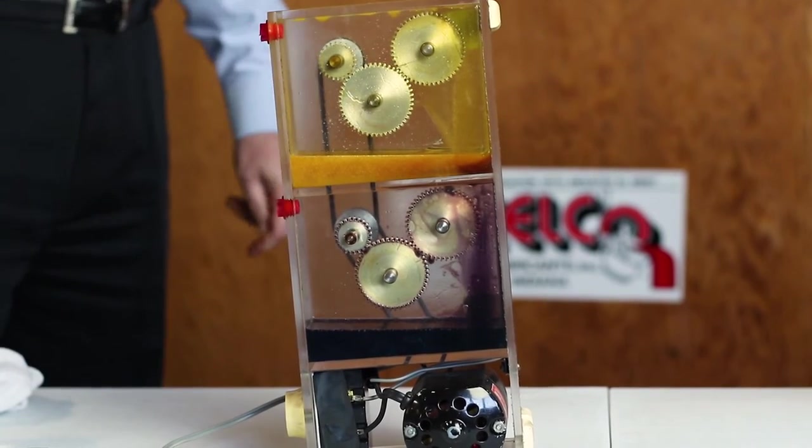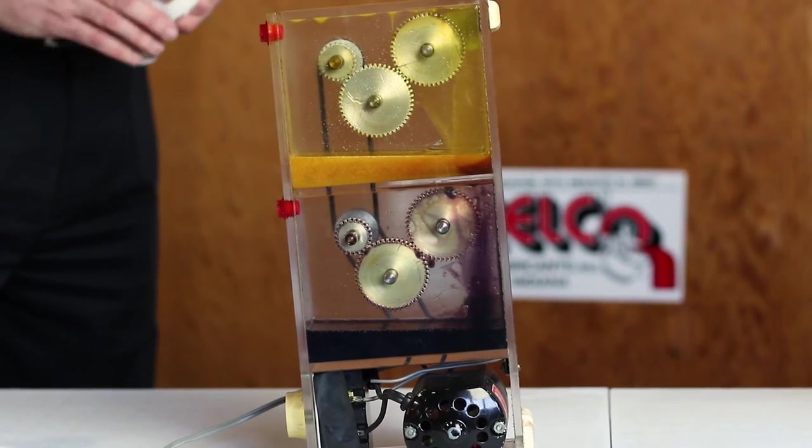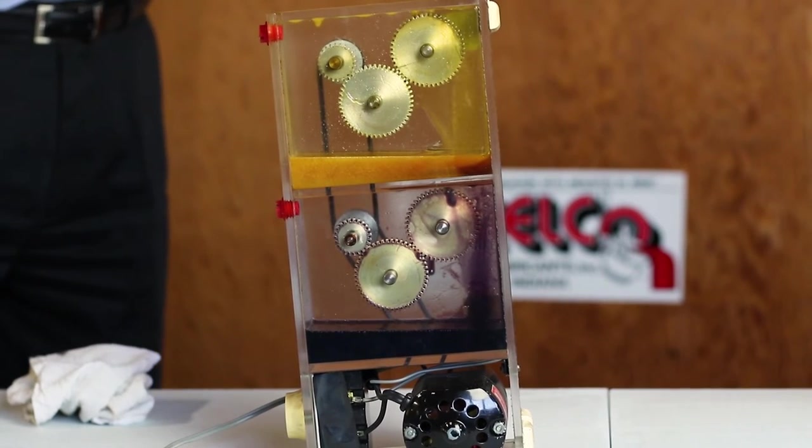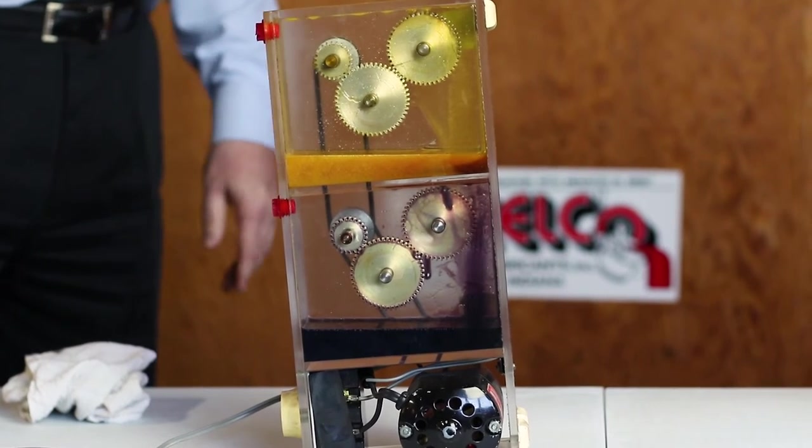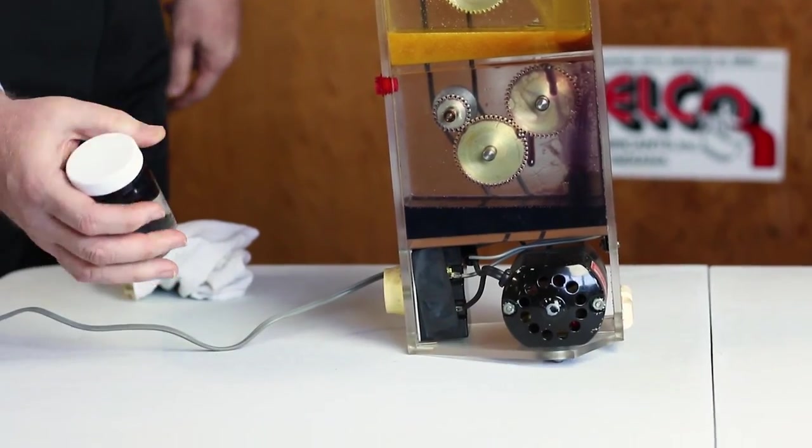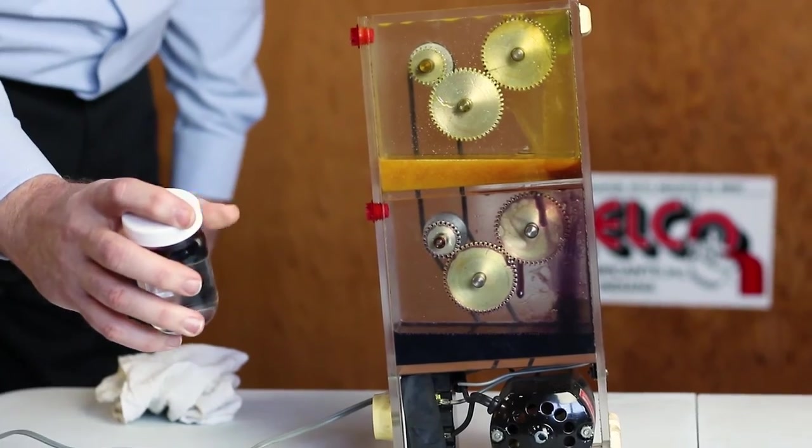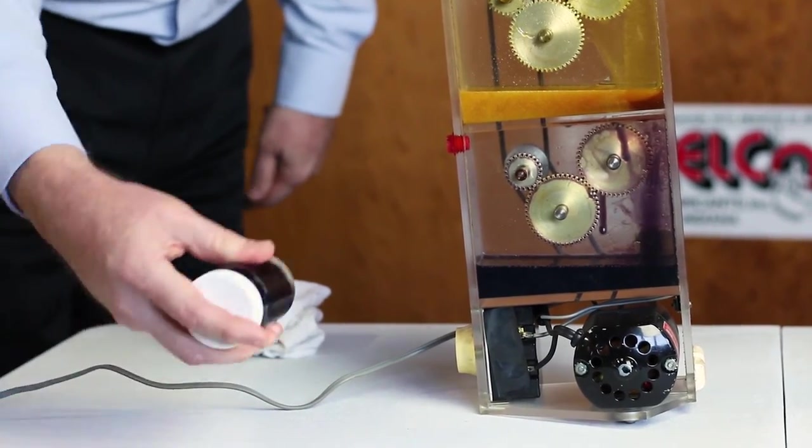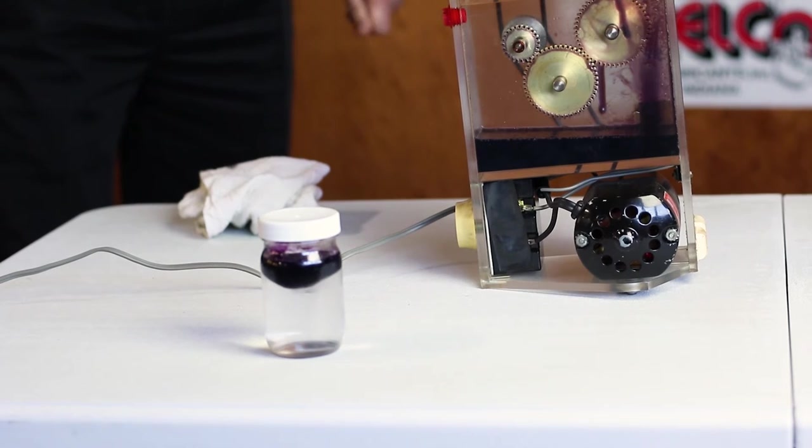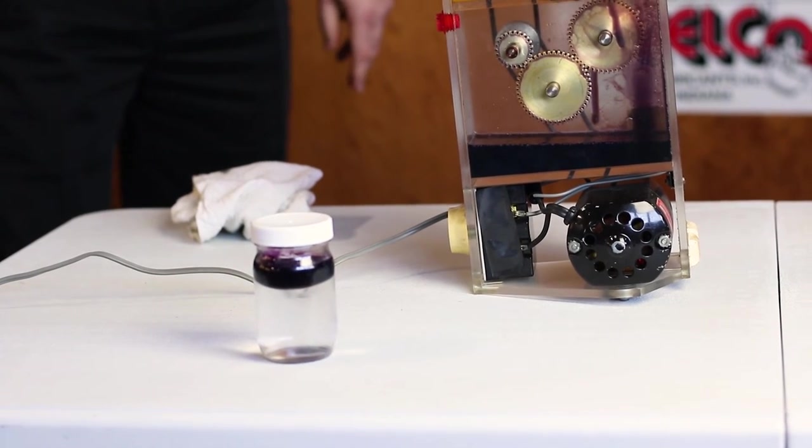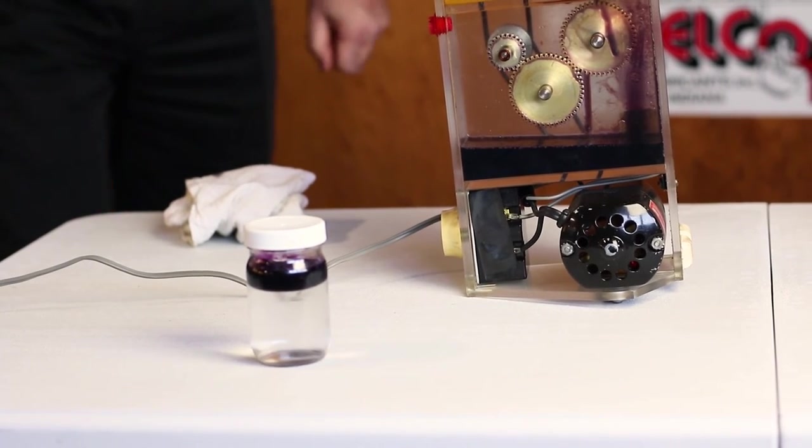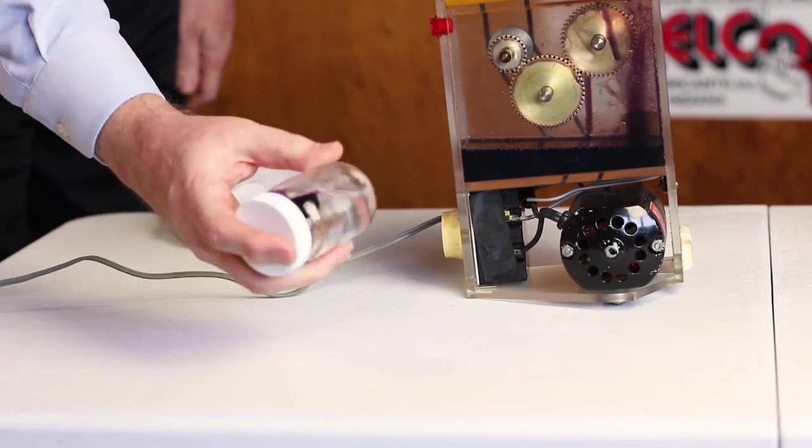Now, one other problem that companies have with gear oil is condensation and water contamination. This is this oil right here and water. Now, I will show you. Usually, if you do this to gear oil and water, it will come looking like that milky caramel color. It will all be mixed with water and stuff, but our gear oil will not mix with water.